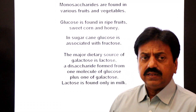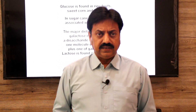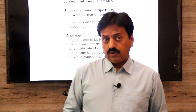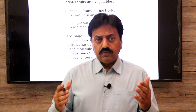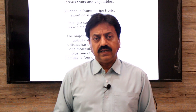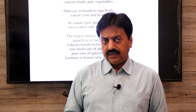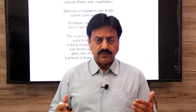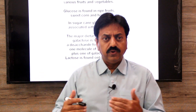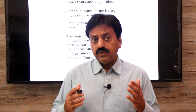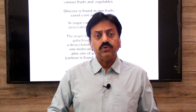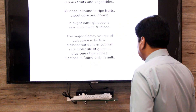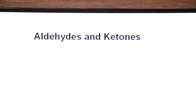Now we move to the structure of monosaccharides, focusing on glucose as an aldohexose and fructose as a ketohexose. Glucose contains an aldehyde group and fructose contains a ketone group. Before discussing these, we need to understand what aldehyde and ketone groups are, so let's discuss aldehydes and ketones.